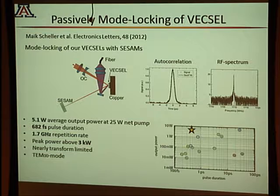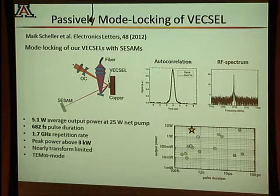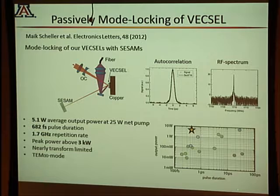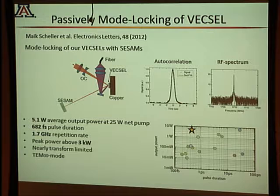Mike Scheller mode-locked the VECSEL by replacing one mirror with a SESAM — a saturable absorber mirror — achieving pulses just under 700 femtoseconds in duration at 1.7 GHz repetition rate with 5.1 watts average power, which is very high. Comparing against a review paper by Wilson Sibbett in St. Andrews plotting average power data for all mode-locked lasers, Mike's result was a dramatic improvement in average power with about 3 kilowatts peak power.